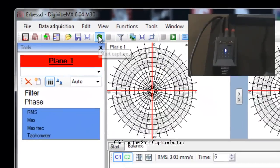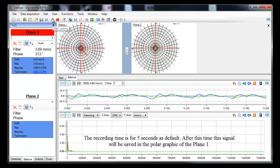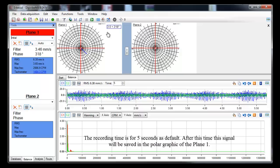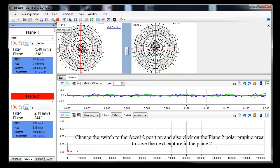Click on the Start Capture button. The recording time is for 5 seconds as default. After this time, this signal will be saved in the Polar Graphic of the Plane 1. Change the switch to the XL2 position, and also click on the Plane 2 Polar Graphic area, to save the next capture in the Plane 2.